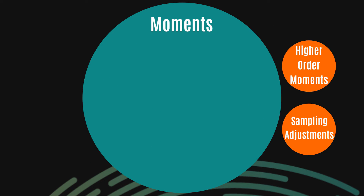Let's see if we can make heads or tails of this very misunderstood statistical concept. Here's how it's going to pan out: I'll provide some intuition around why moments work and we'll look at the first and second moments, discovering the difference between crude and centered moments. After that, we'll take into account higher-order moments — the third and fourth moments in particular — and then assess how to adjust for sampling, which will involve some discussion of degrees of freedom.